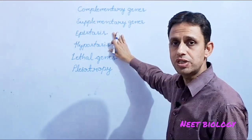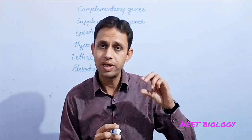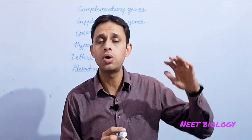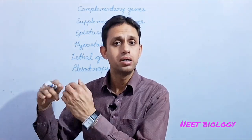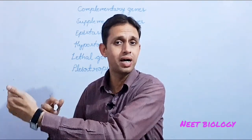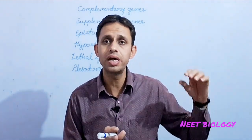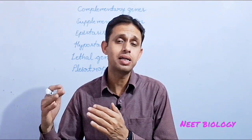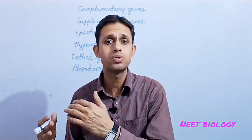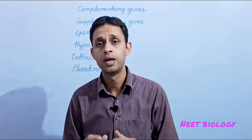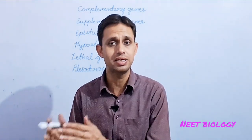The next term is epistasis: when the pair of genes present on one chromosome at a locus suppress the gene pair of another chromosome. Epistasis क्या है? जब एक chromosome के gene के pair, किसी अन्य chromosome के gene के pair को suppress करते हैं, उसके effect को suppress करते हैं, तो this is called epistasis and the genes are known as epistatic genes.